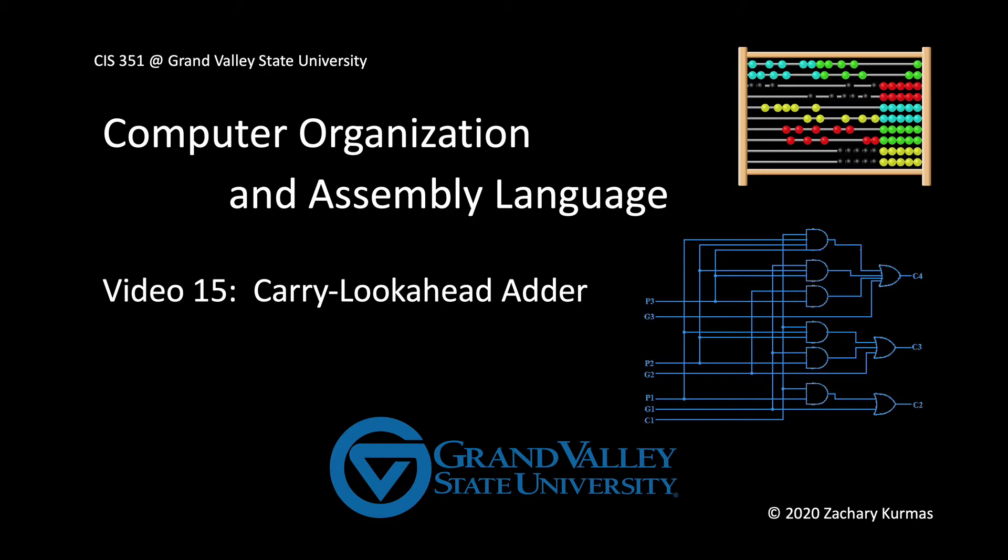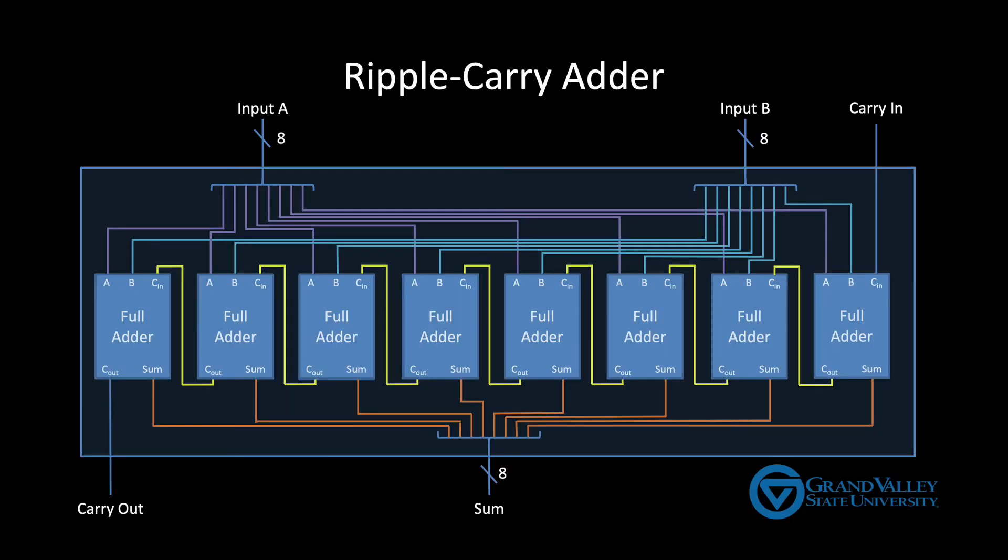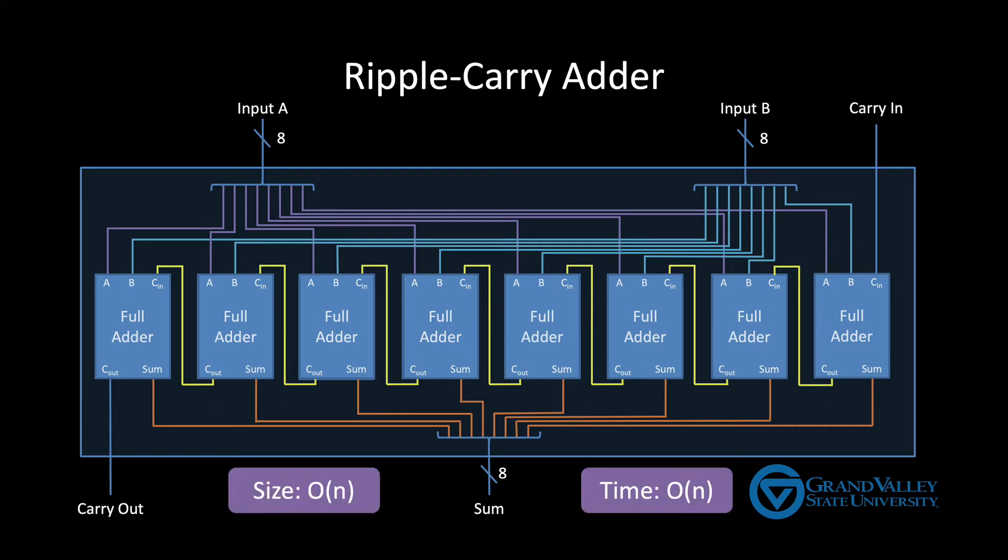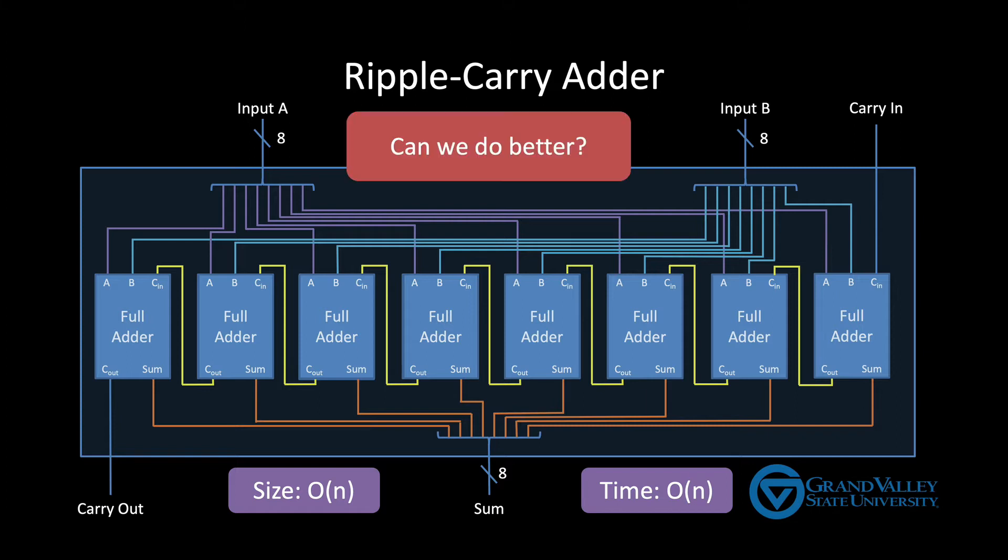In the previous videos we built a ripple carry adder and then determined that both the size and time of the circuits designed using this pattern grow linearly as the number of input bits increases. And then we finished by wondering if we can do better.